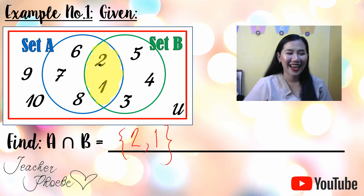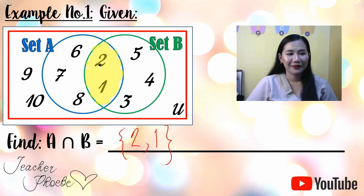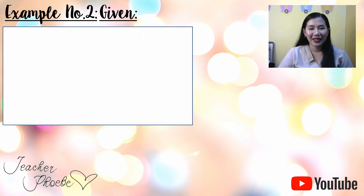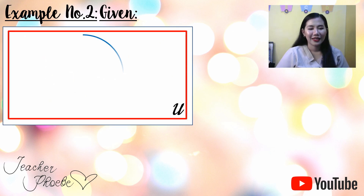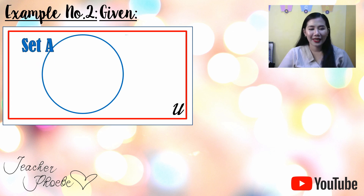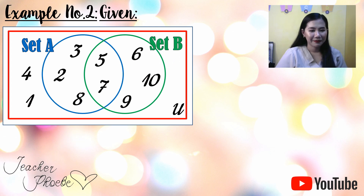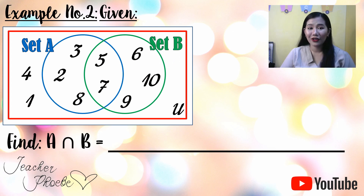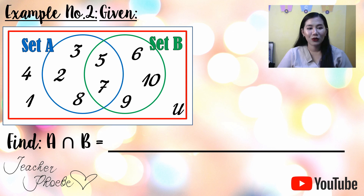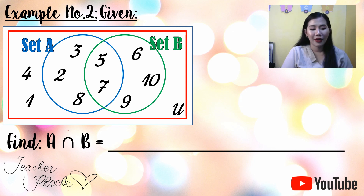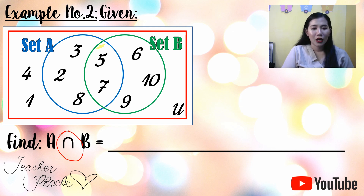Next, let's have Example Number Two. Again we have a universal set, a blue circle for Set A and a green circle for Set B, and the elements. Find the intersection of A and B. To find the intersection, always remember that it is found in the shaded portion — that is the intersection of Set A and B.